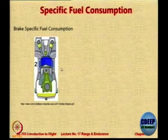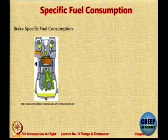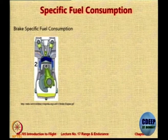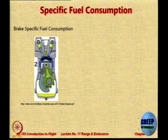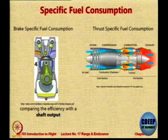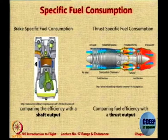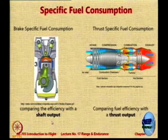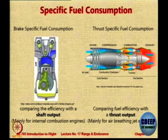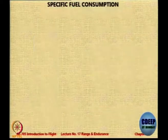Let us look at what exactly determines how much you can travel on a given amount of fuel. One of the important parameters is the SFC. For an IC engine it is the brake specific fuel consumption, and for a jet engine it is TSFC. In the IC engine we are concerned about the brake or the shaft horsepower, whereas here we are concerned about the thrust produced directly. This shaft horsepower is consumed by a propeller. Depending on whether you are concerned about power or thrust, there are two different definitions for the specific fuel consumption.